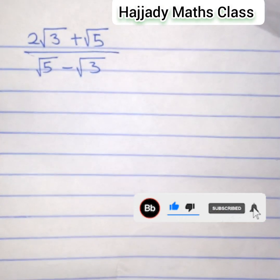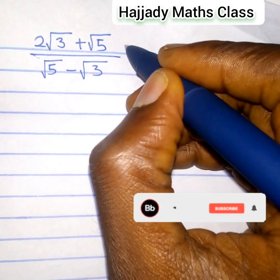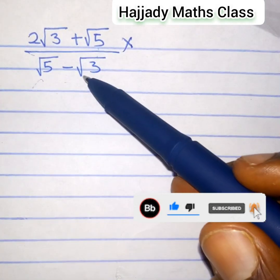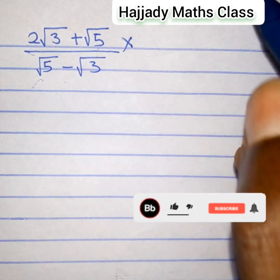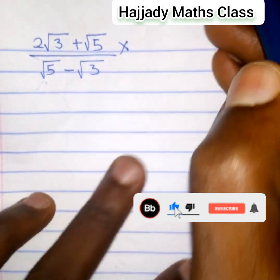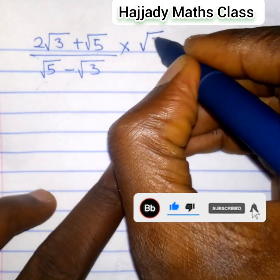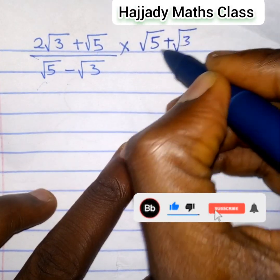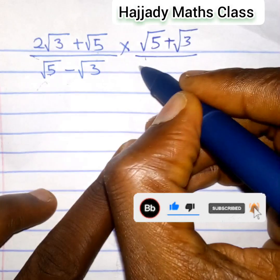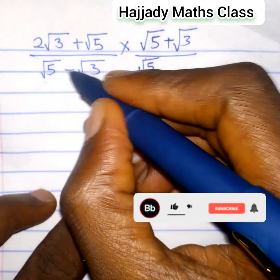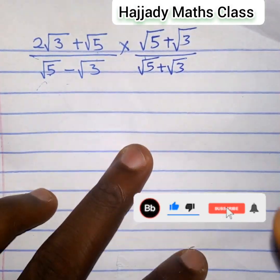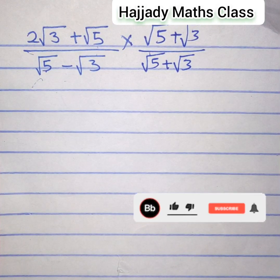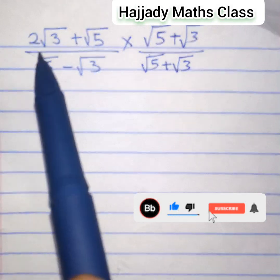This is a surd question and in rationalizing a surd, that means we are going to multiply both the numerator and the denominator by this denominator while the sign is going to change. So in this case, we have multiplied by root 5, which is the denominator, the sign changes to plus root 3, all over root 5, the sign changes to plus root 3. This is the method for rationalizing surds. So proceeding with this, we are going to multiply further.